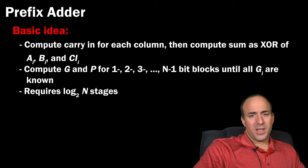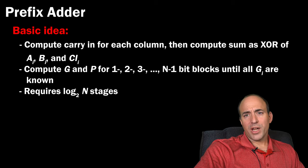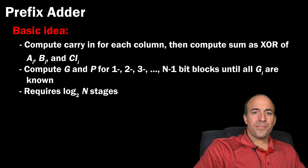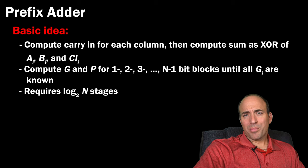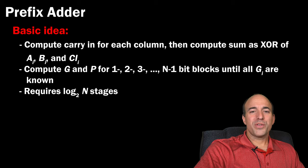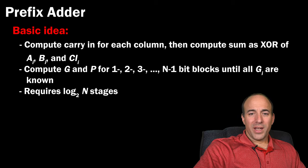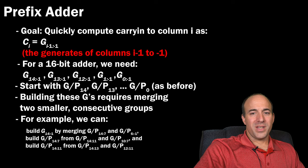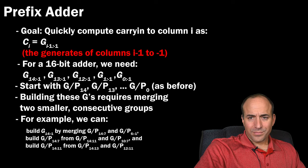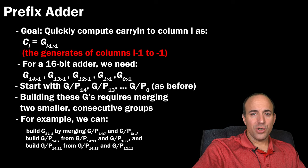The prefix adder is a third adder design that further reduces propagation delay. Instead of relying on previously computed carry-ins, the prefix adder uses only generate and propagate signals. The top-level carry-in is renamed g_{-1}, the generate from column negative 1. The prefix adder computes generate and propagate for all columns from n-2 down to 0 — for a 16-bit adder, that's 14 GNP pairs.